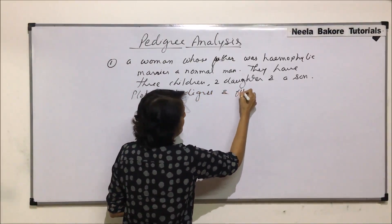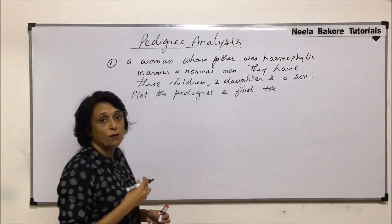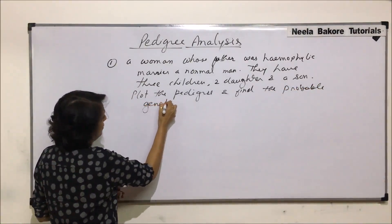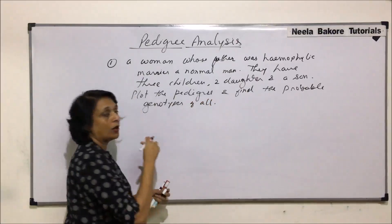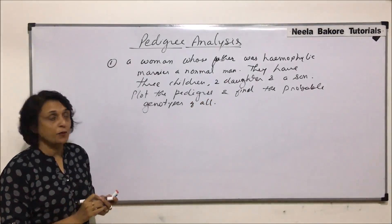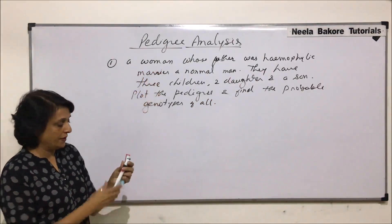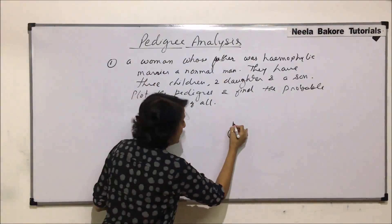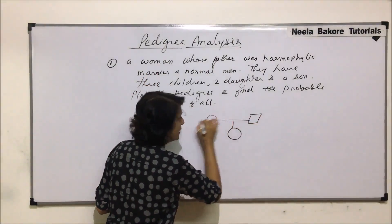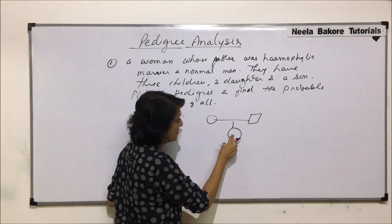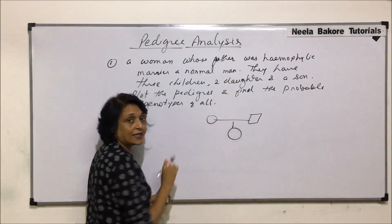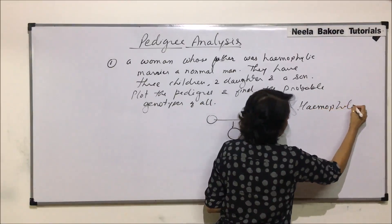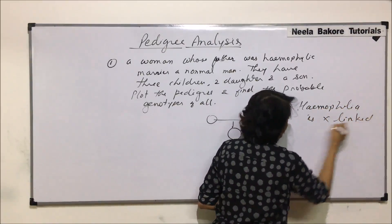We need to find the probable genotypes of all individuals, including the parents as well as the offspring. Our starting point is this woman. Her father is hemophilic, and hemophilia is an X-linked recessive disorder.